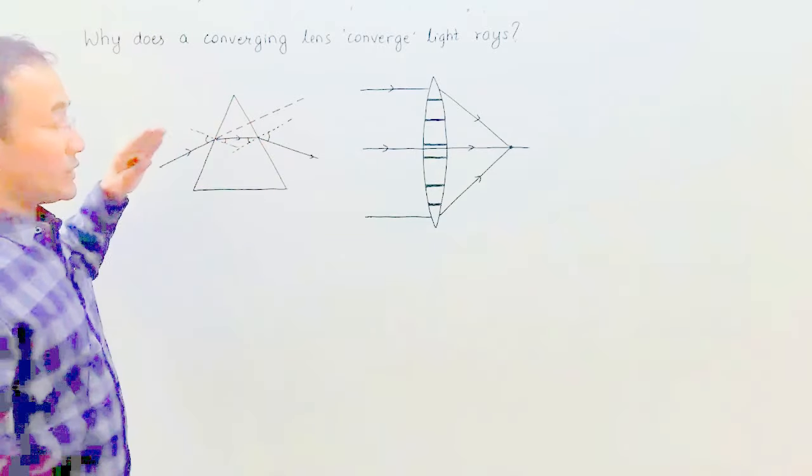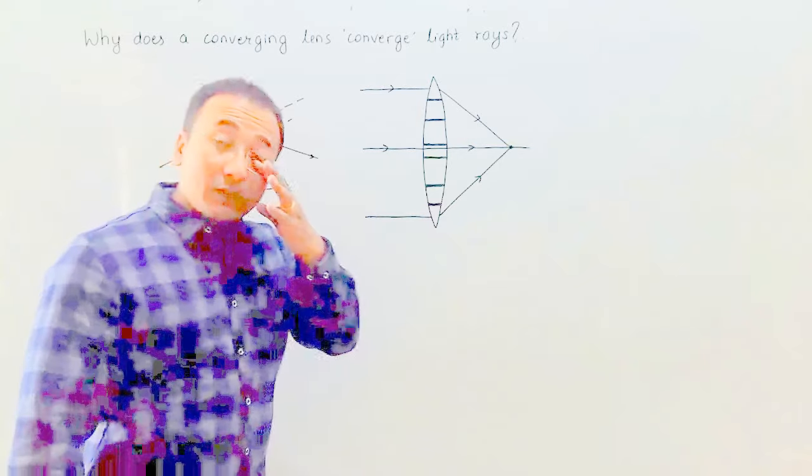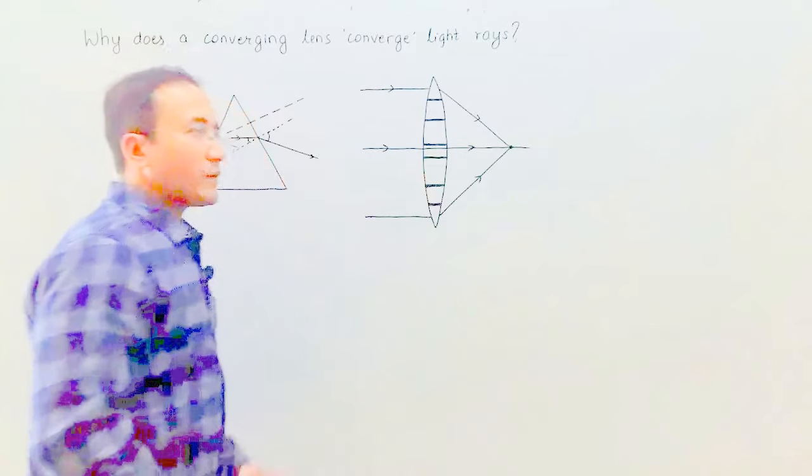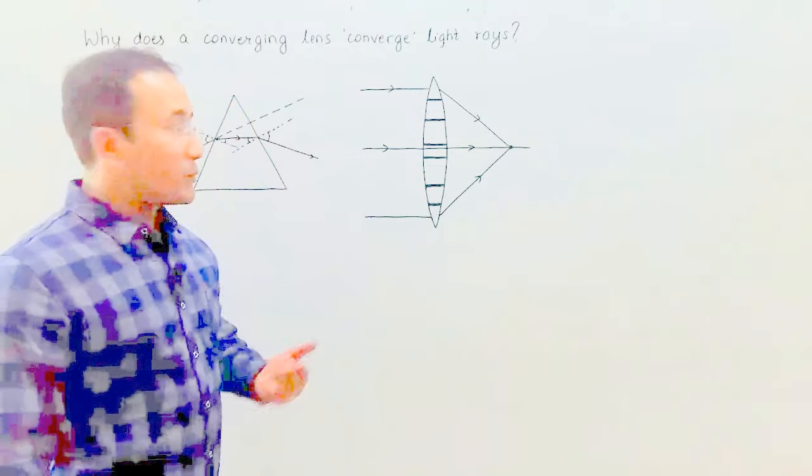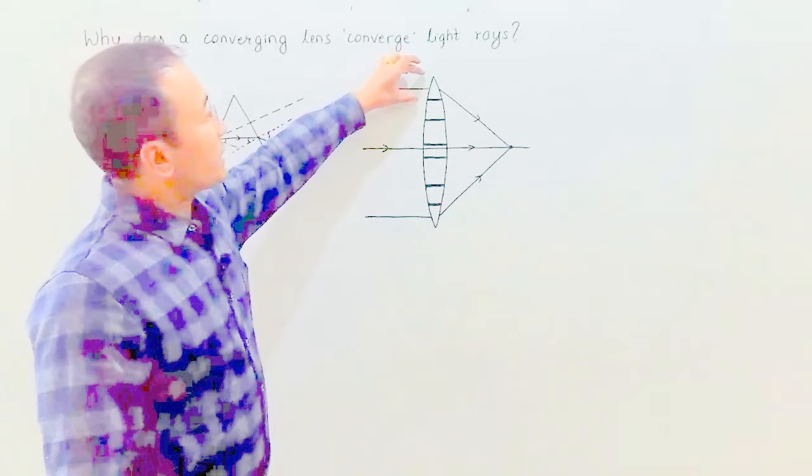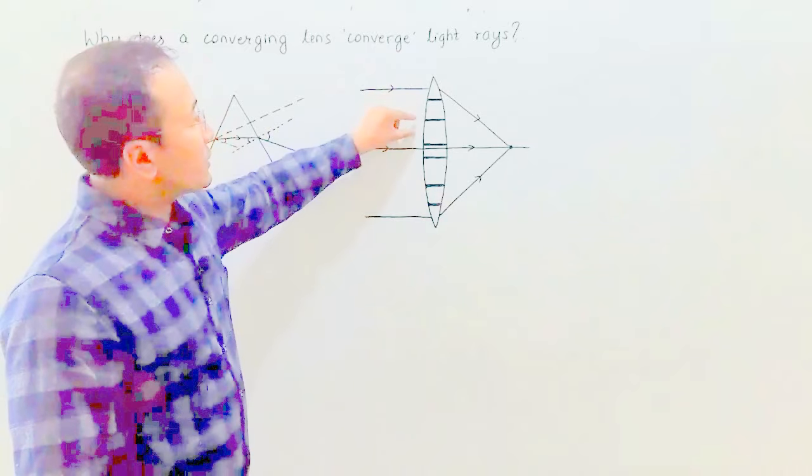In the same case with the convex lens, I can consider the convex lens to be made of a lot of small prisms stacked over one another. It has got a full prism here. The others are truncated prisms, which means that they are cut, truncated prisms.